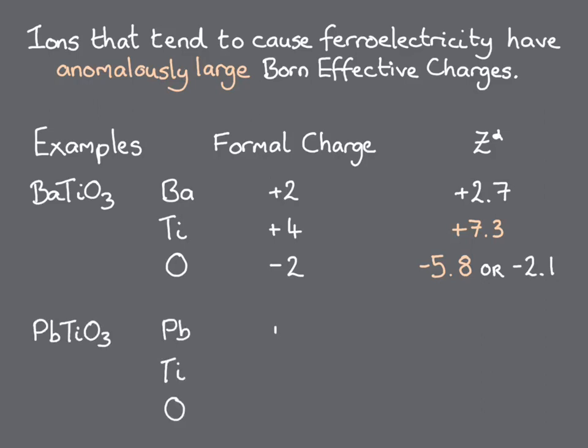Lead titanate has the same formal charges as barium titanate, and its titanium ion also displaces towards one of the oxygen ions as it becomes ferroelectric. In addition, its lead ion has a lone pair of electrons which are stereochemically active, meaning that they shift to one side of the positive lead ion, forming a dipole in the ferroelectric state. We see that the born effective charges on the titanium and oxygen ions are similar to those of barium titanate, whereas that on the lead ion is anomalously large.